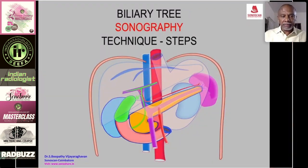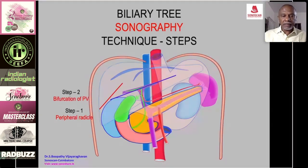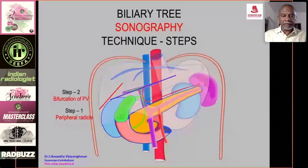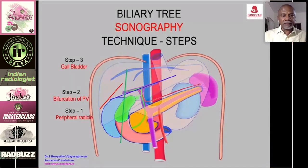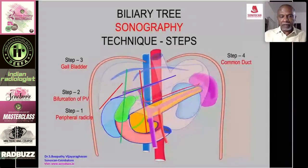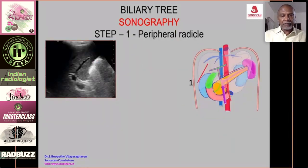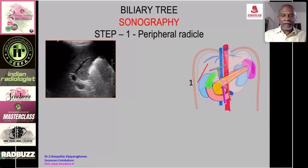The technique involves defined steps. Step one: look for the peripheral biliary radical. Step two: scan through the bifurcation of the portal vein to see the right and left hepatic ducts anterior to the right and left branches of the portal vein. Step three: study the gallbladder. Step four: long axis of the common duct. Step five: transverse scan of the pancreas.